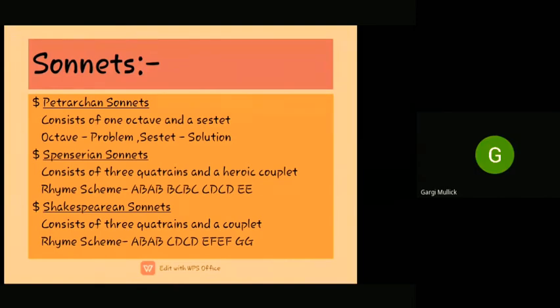Here we come to the Shakespearean sonnets, which consist of three quatrains and a concluding couplet, similar to what Spenser wrote. But the rhyme scheme is dissimilar to that of Spenser. The rhyme scheme that Shakespeare used was very simple: ABAB CDCD EFEF GG.